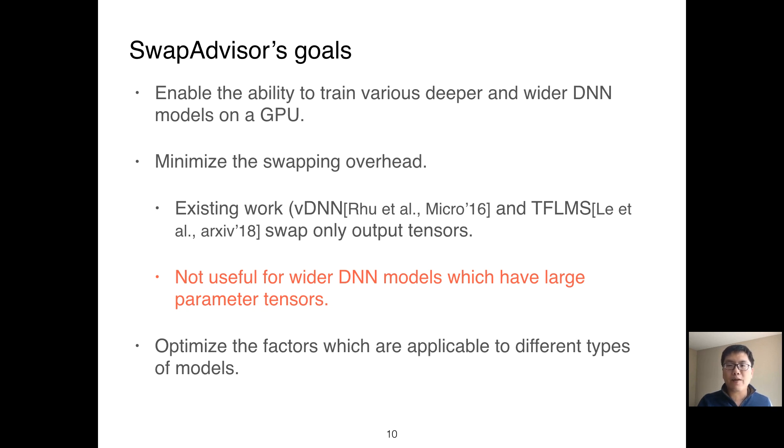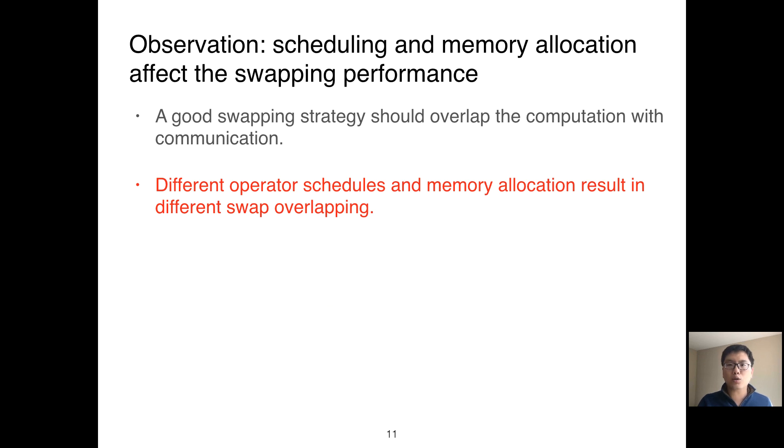So the optimization factors used by SwapAdvisor must be applicable to different types of large models. In order to understand what are the general factors that affect swapping overhead, we need to define what is a good swapping strategy. A swapping strategy which swaps many tensors is not necessarily bad, as long as the swapping communication can be overlapped with computation.